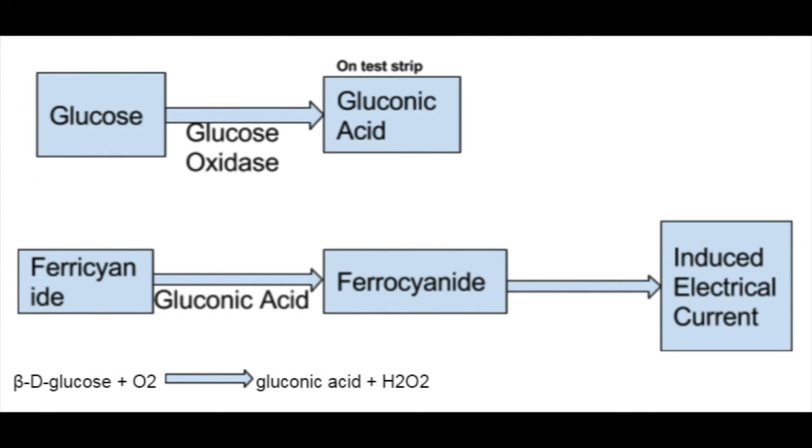The chemical process that takes place on the test strip includes first the conversion of glucose to gluconic acid by glucose oxidase. This gluconic acid then converts ferricyanide to ferrocyanide, which induces an electrical current according to how much of the conversion occurs. This in turn calculates the approximate blood glucose level.